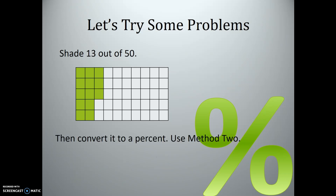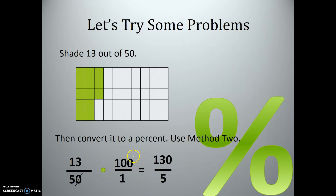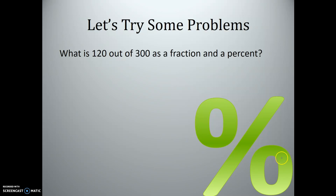Now let's use method two: write 13 over 50 times 100 over 1, and cross-cancel by dividing that numerator and denominator by 10. We get 13 times 10 over 5 times 1, which simplifies to 130 over 5. Dividing that out gives us 26, so that equals 26%.